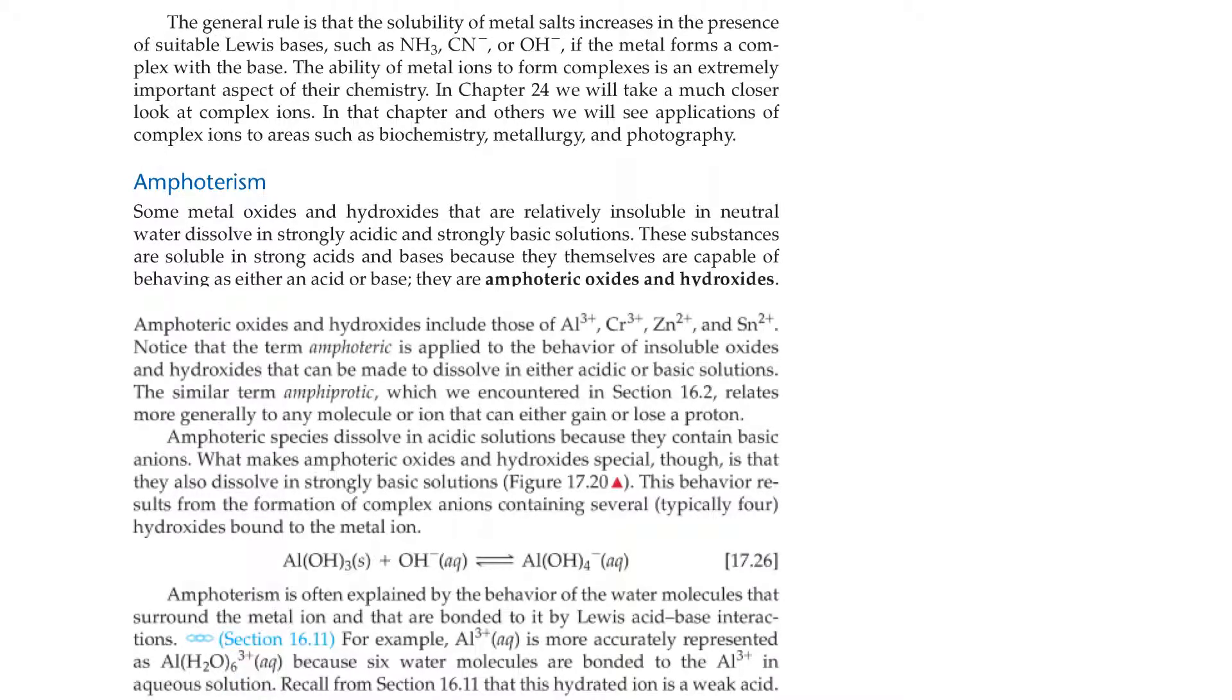The general rule is that the solubility of metal salts increases in the presence of suitable Lewis bases, such as ammonia, cyanide, or hydroxide, if the metal forms a complex with the base. The ability of metal ions to form complexes is an extremely important aspect of their chemistry. In Chapter 24, we'll take a much closer look at complex ions. In that chapter and others, we'll see the applications of complex ions to areas such as biochemistry, metallurgy, and photography.